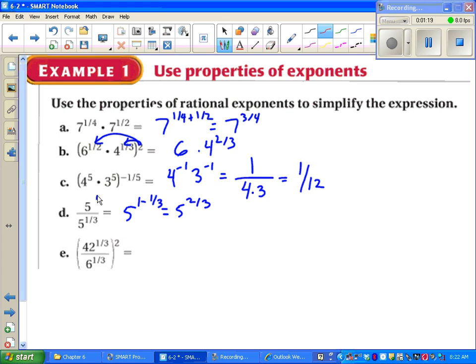And part E has the most complicated looking one. I notice my exponents are the same though, the 1/3rds. Which means I can simplify this by putting the 42 over 6 to the 1/3rd, all raised to the 2nd power. The reason I wanted to put that 42 over 6 together is that it simplifies to 7. And 1/3rd raised to the 2nd would be 2/3rds. Much simpler than what it originally looked like in part E.